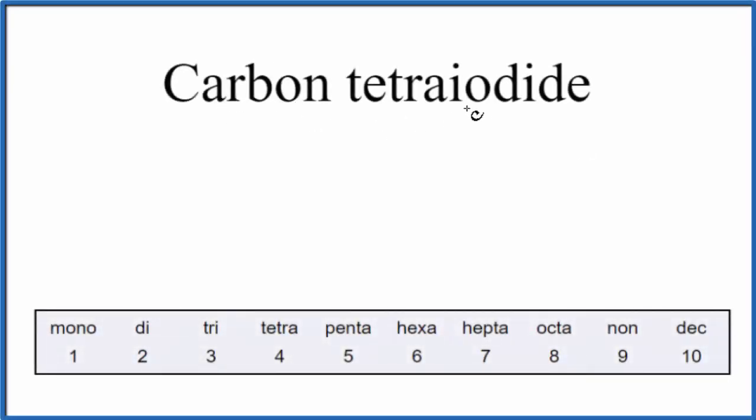To write the formula for carbon tetraiodide, we first need to figure out what type of compound we have.